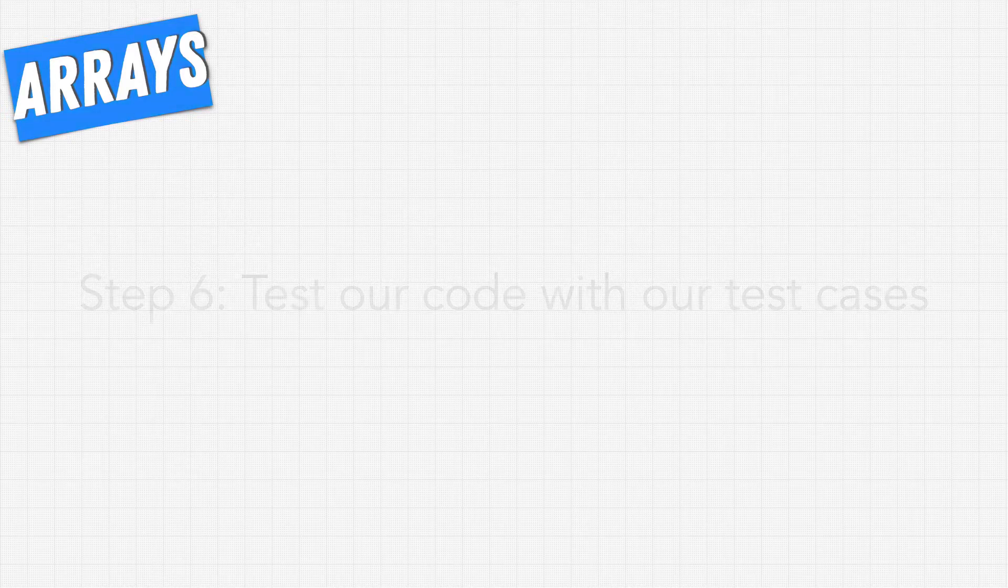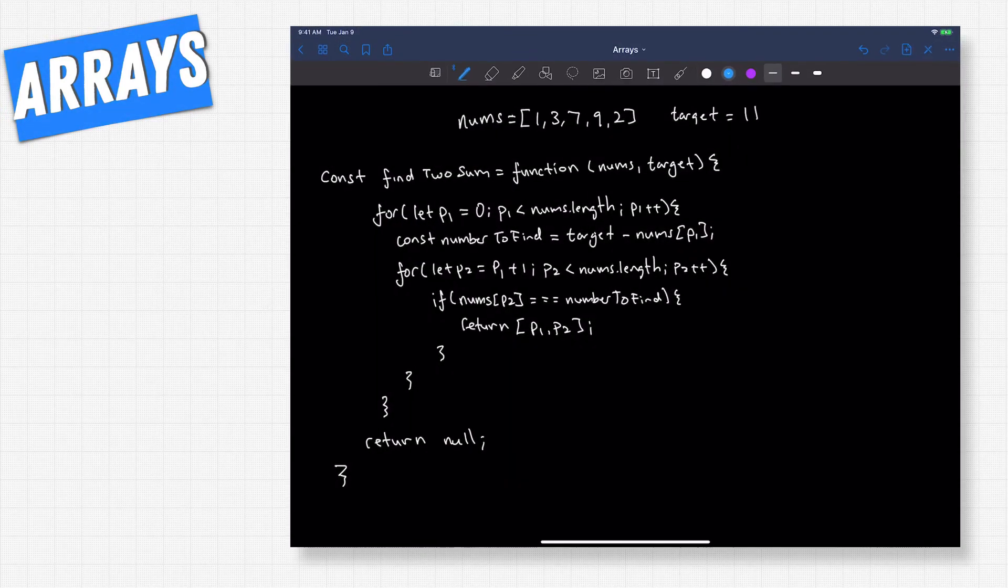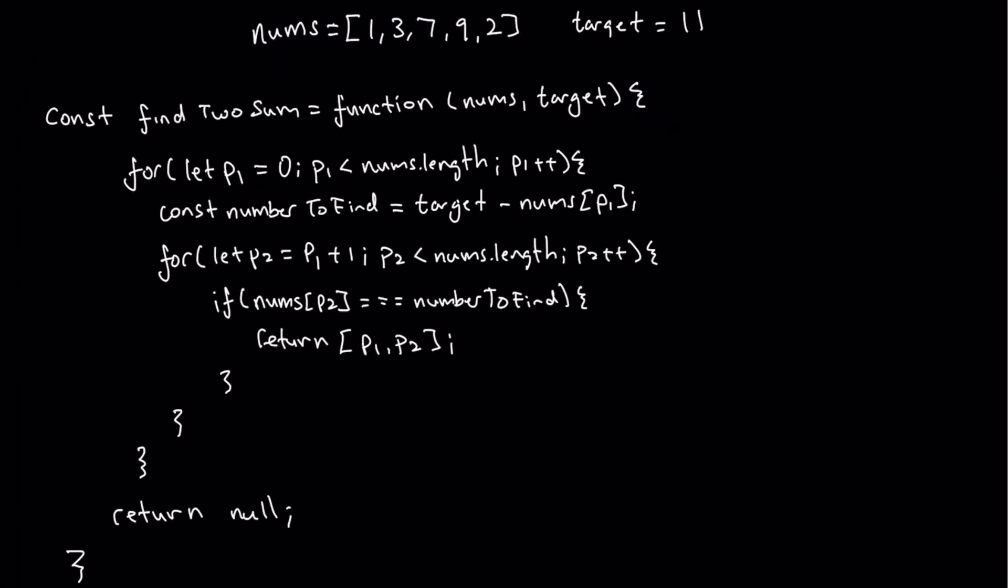After this step, our interviewer is going to ask us about the space and time complexity of our solution. Looking at this, we should see right away that we have two for loops, one nested in the other. This should ring some bells in your head telling you that the time complexity is at least O of n squared, because two for loops is pretty much the hallmark of n squared time complexity. So you might be wondering, this second for loop doesn't touch every element. If P1 was in the middle of our array, P2 can only ever be in the latter half of this array. It can never touch what's on this side.